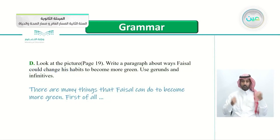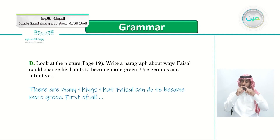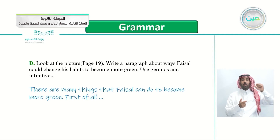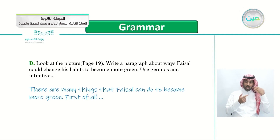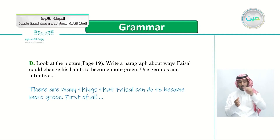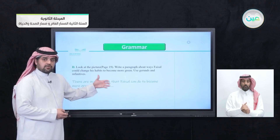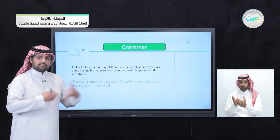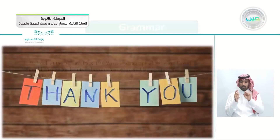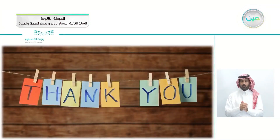Exercise D: look at the picture on page 19 and write a paragraph about ways Faisal could change his habits to become more green, using gerunds and infinitives. For example: 'There are many things that Faisal can do to become more green. First of all...' and continue writing about the picture. And with that, we reach the end of this lesson. See you next lesson, inshallah. As-salamu alaykum.